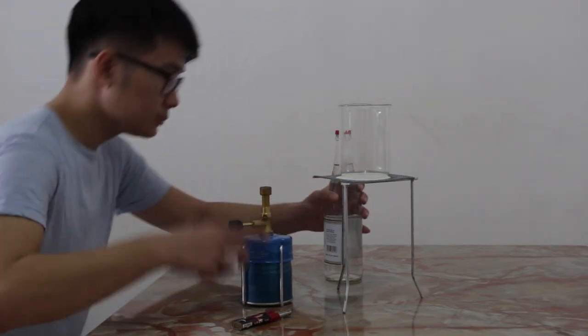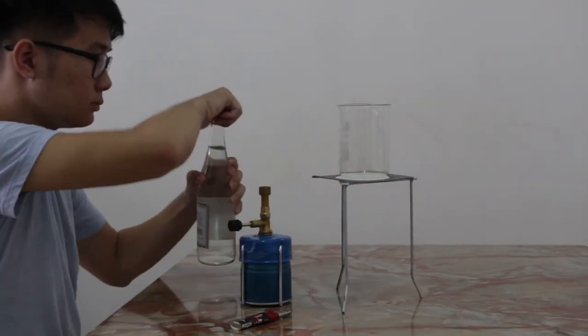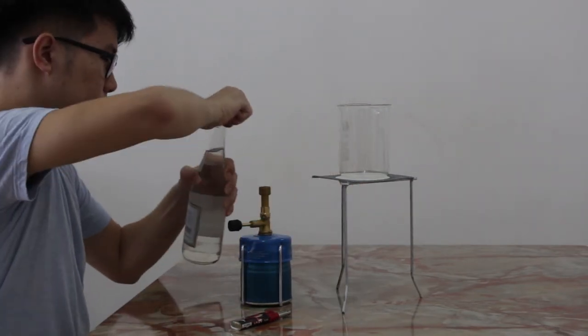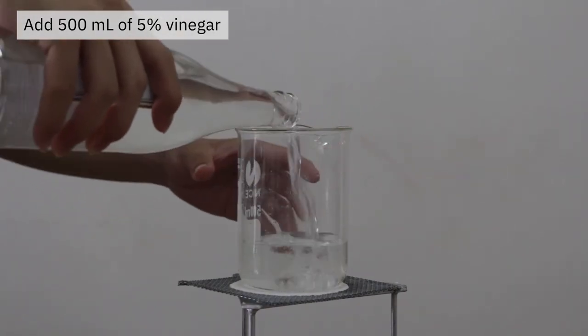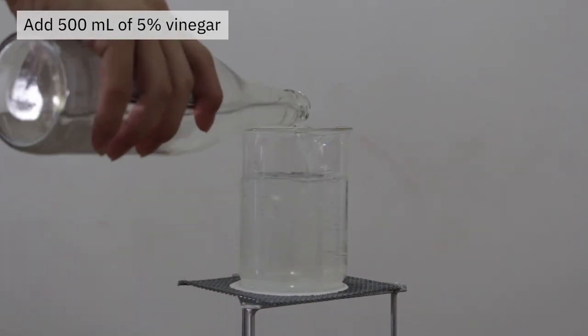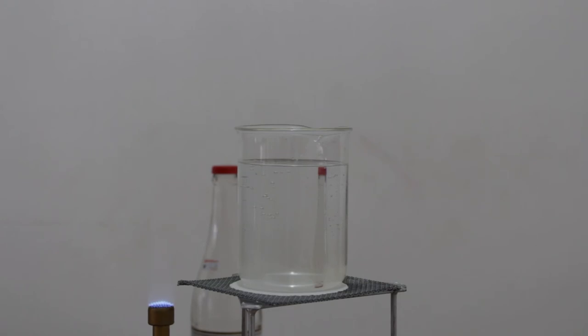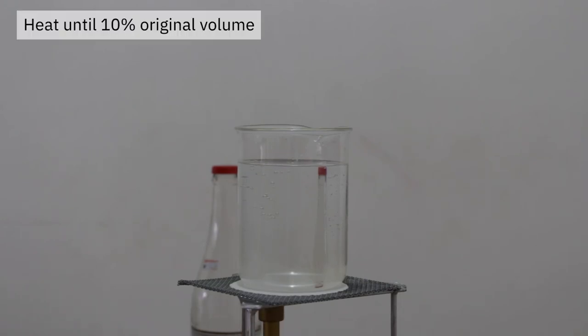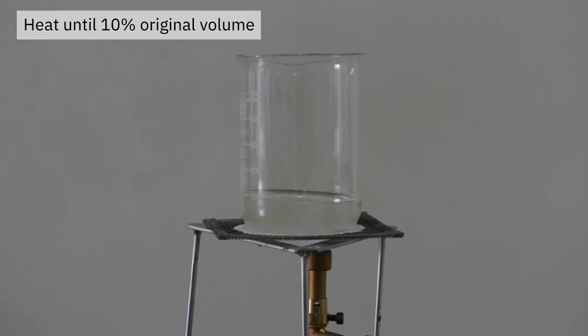The third part of the experiment then uses the earlier ethanol to synthesize ethyl acetate. 500ml of vinegar is poured into a beaker. Then, the vinegar is heated and boiled until only 10% of the original volume is left.